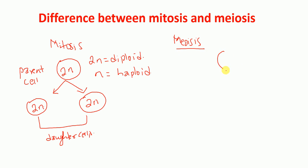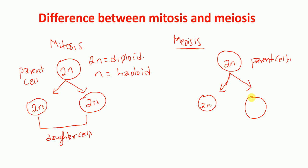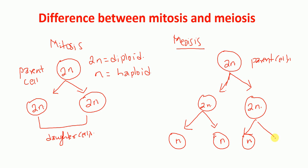In meiosis cell division, we have one parent cell that is diploid in nature. This parent cell divides, and first we will have two diploid cells. These two cells will also further divide, and we will get haploid cells — N number of chromosomes. So in meiosis, the division occurs two times: a first division and a second division. From one single cell we get four daughter cells which are haploid in nature.